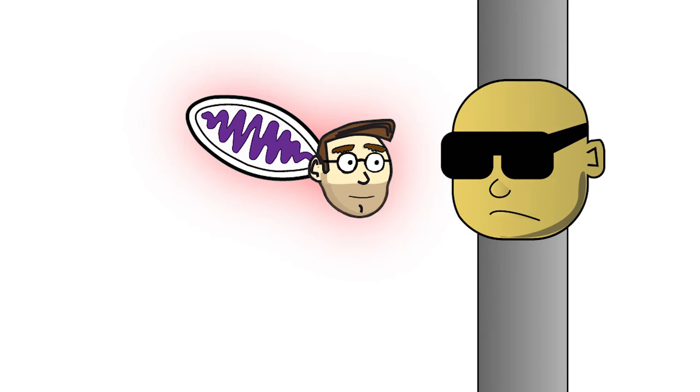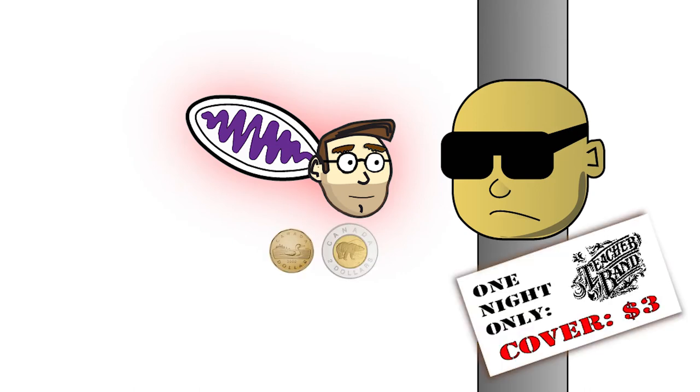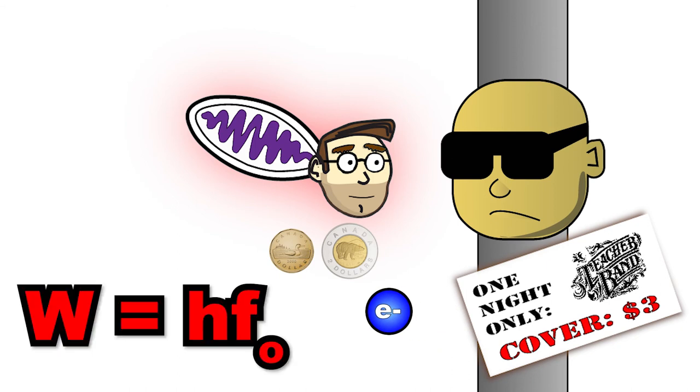When a photon has just enough energy to pay the work function, we say that this photon is at the threshold frequency. The threshold frequency is the minimum frequency needed for the light to cause electrons to be released and is related to the work function of the metal by the equation W equals h f naught.